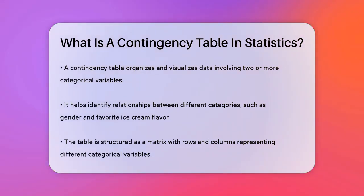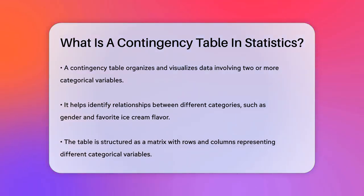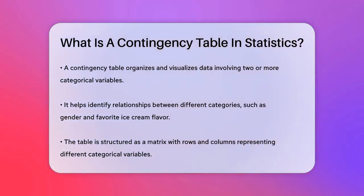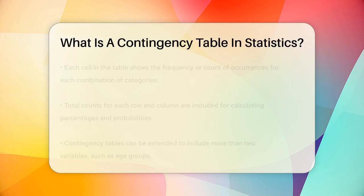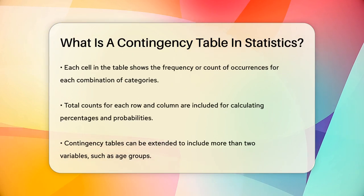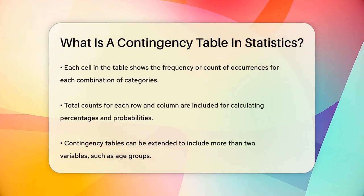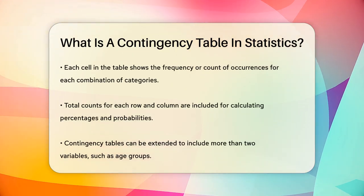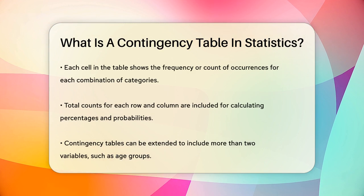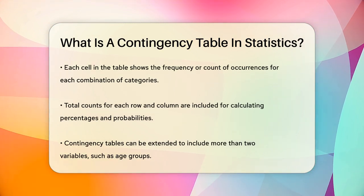A contingency table is a matrix with rows and columns, each representing a different categorical variable. For example, if you're looking at the relationship between gender — male or female — and favorite ice cream flavor, let's say chocolate, strawberry, or vanilla, the rows could represent the genders and the columns could represent the ice cream flavors.